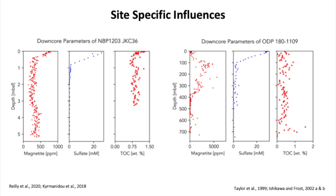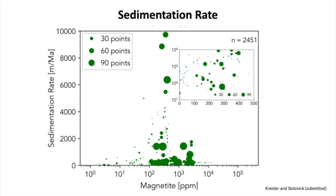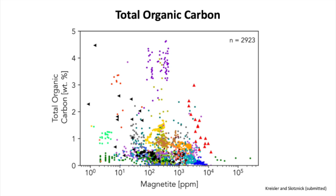We also looked at sedimentation rate. It's been suggested as really important, but we found it's a little more complicated — at high sedimentation rates we might expect higher magnetite, but it was hard to tell clearly. Part of this is because we sometimes had one sedimentation rate for many data points and had to average them. Then for total organic carbon, we really didn't notice a strong correlation, which is interesting because TOC drives the sulfate reduction. TOC seemed to have the weakest link of the three factors.